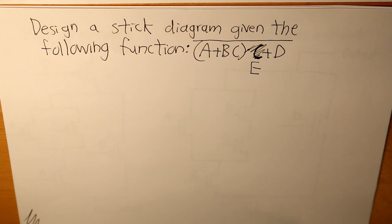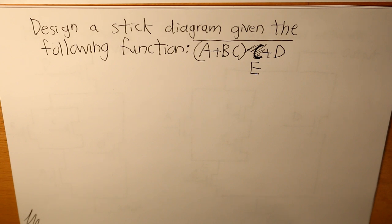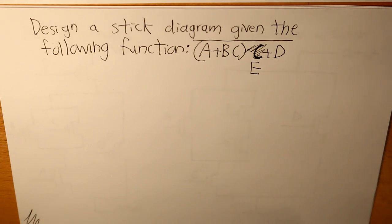Hello everyone. In today's video we are going to be doing an example where we are given a CMOS function and we have to design a stick diagram. The question asks us to design a stick diagram given the following function: A is in parallel with B in series with C, and that whole thing will be in series with E, and then that entire thing will be in parallel with D. It's a pretty complicated function.